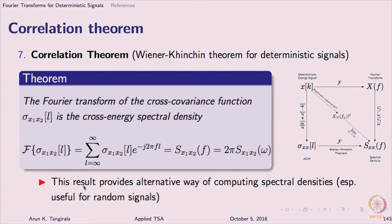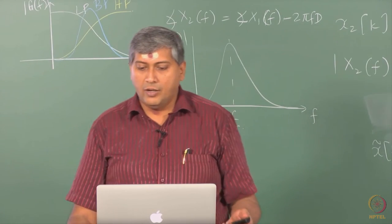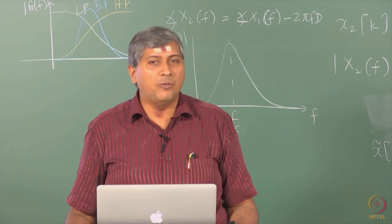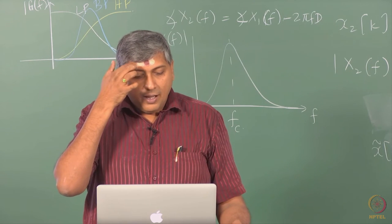The Fourier transform route to arrive at the energy spectral density is fine for deterministic signals. For random signals, this route is closed. If you think of this as a power spectral density of a random signal, this route is not as straightforward as it appears. To adopt this route, one has to turn to what is known as generalized harmonic analysis, introduced by Wiener — we will not discuss it at all. We will primarily use the auto covariance route: compute the auto covariance, take the Fourier transform, and arrive at the spectral density.